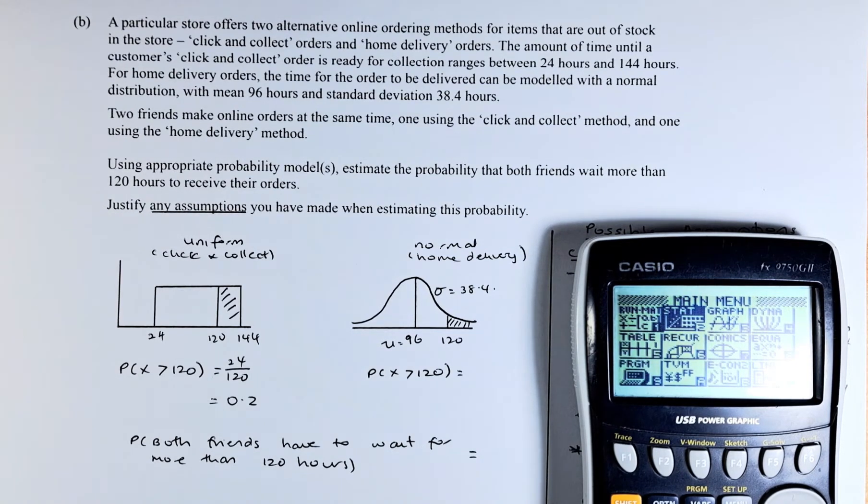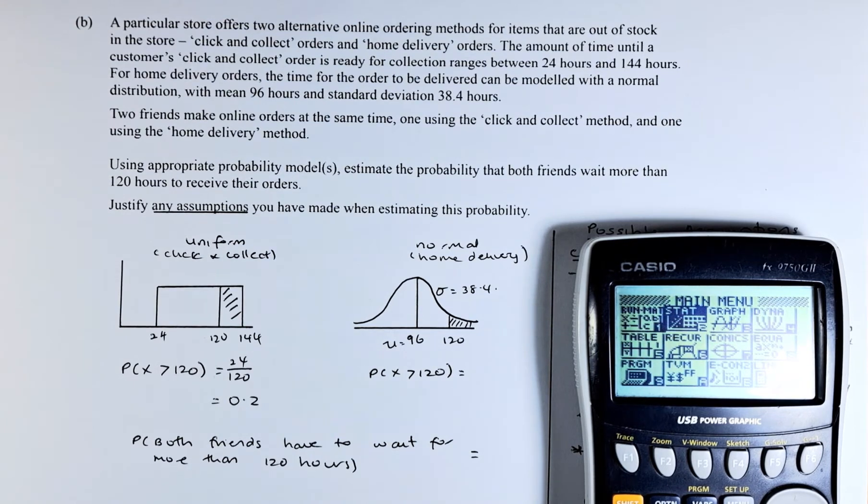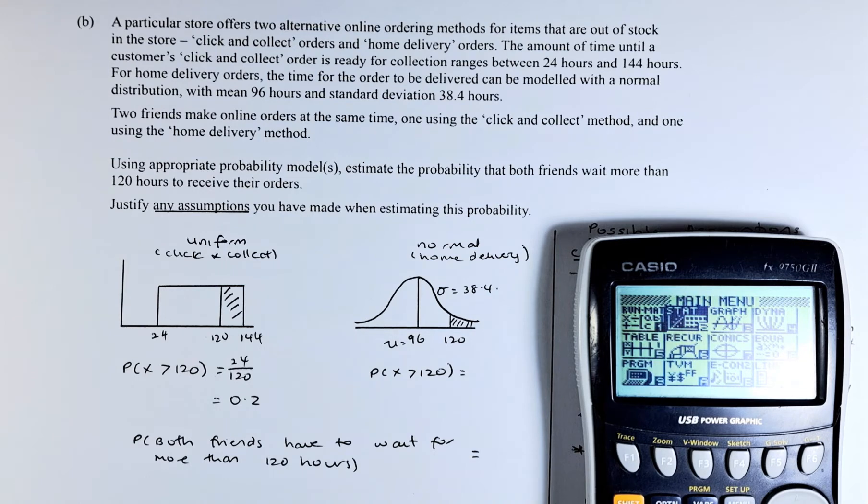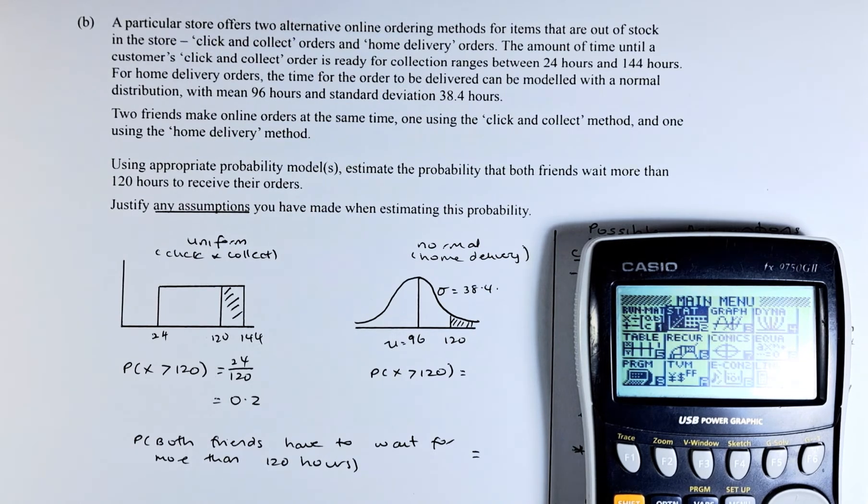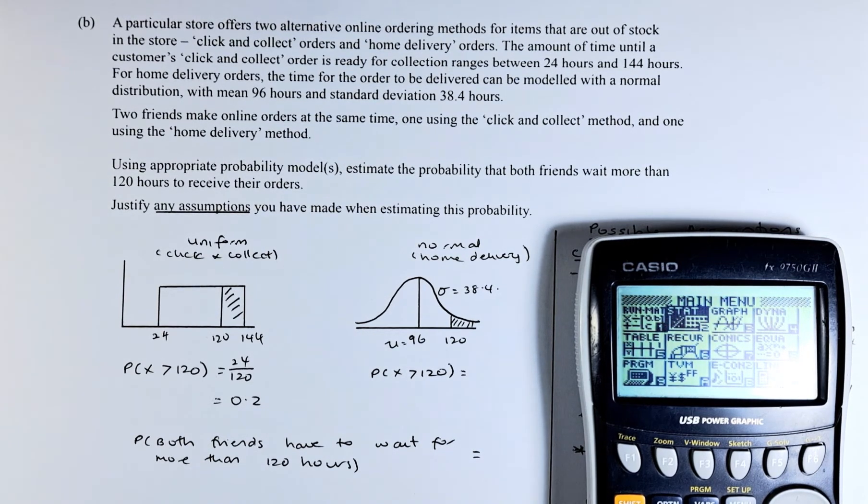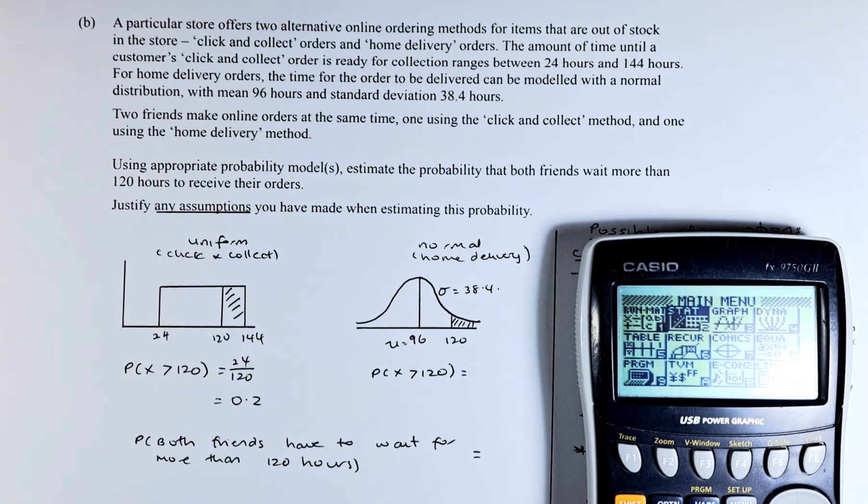Good day. In this video we are trying to solve question 1b of the 2022 NCEA Level 3 statistics paper on probability distribution. Without further ado, let's try to solve this problem. A particular store offers two alternative online ordering methods for items that are out of stock in the store: click and collect orders and home delivery orders.